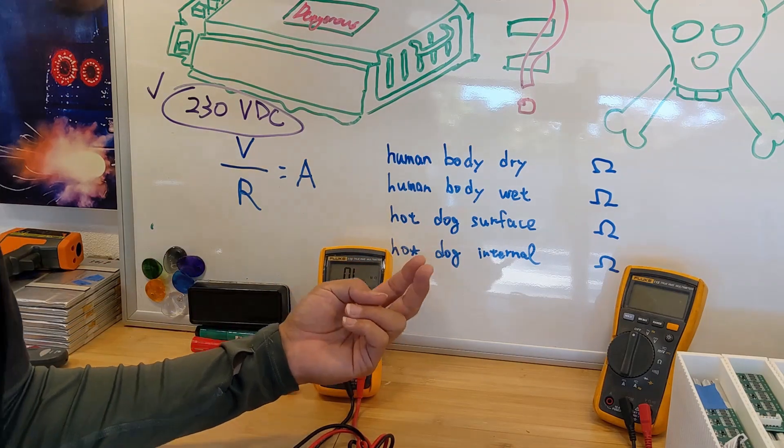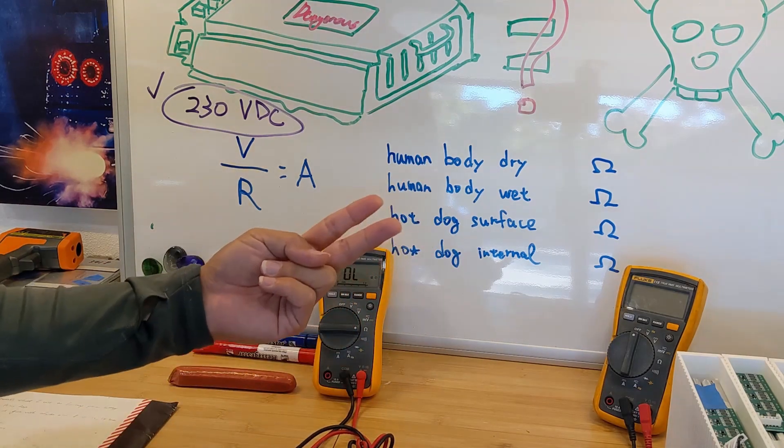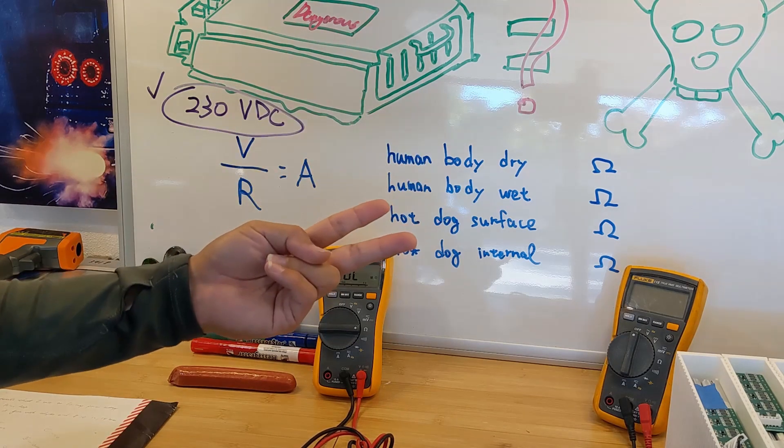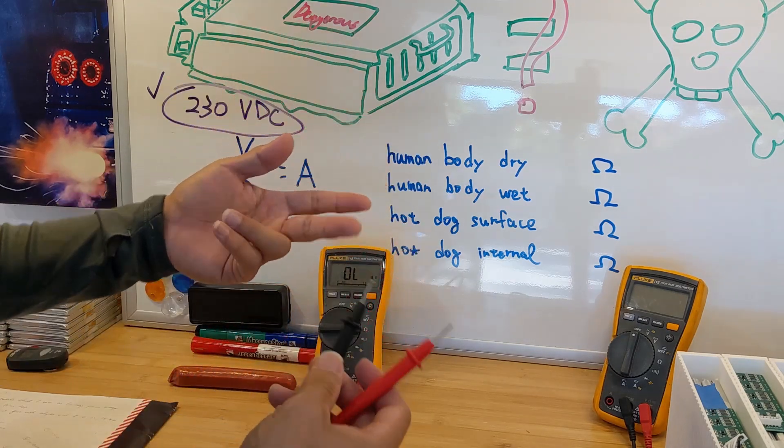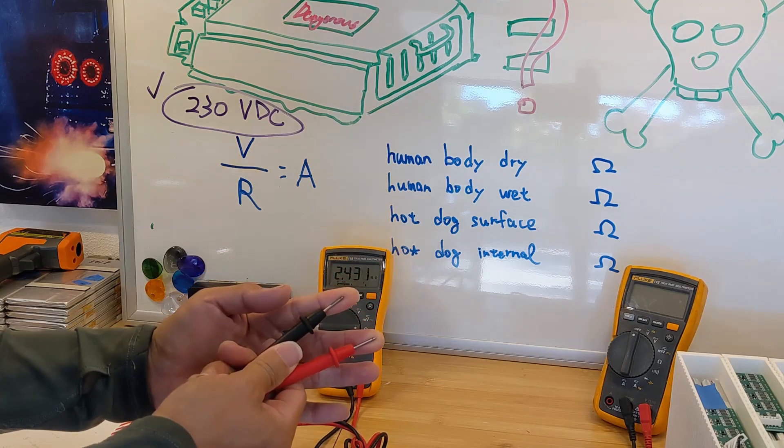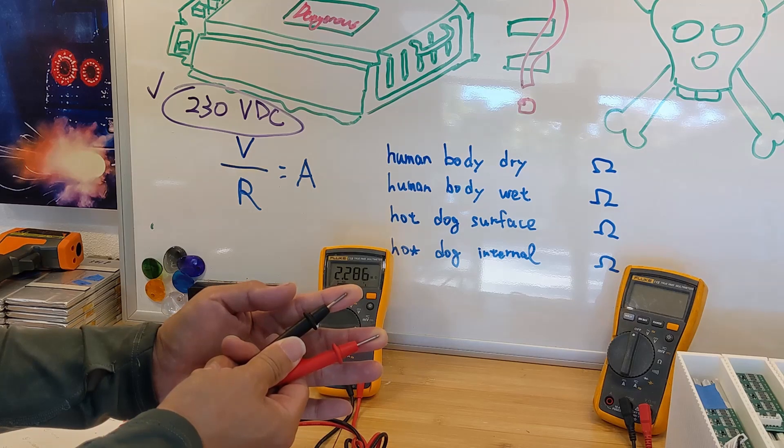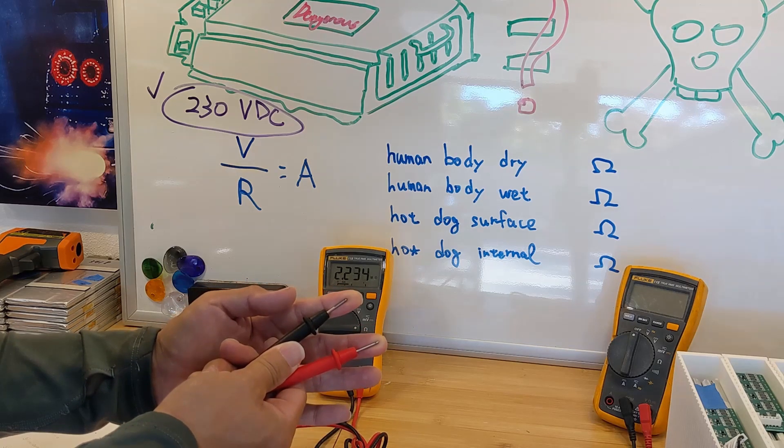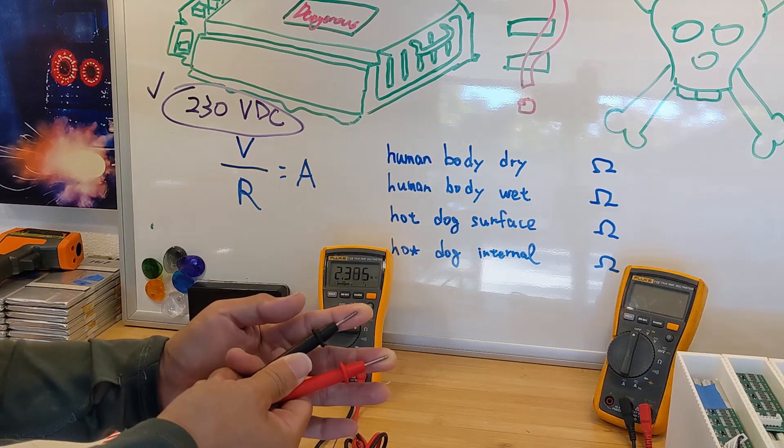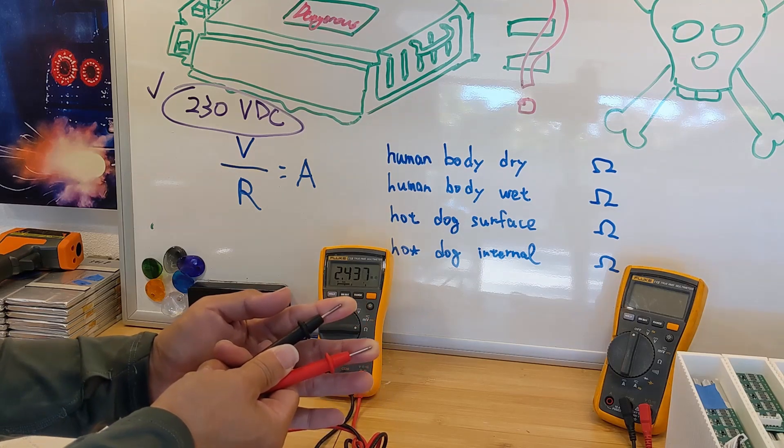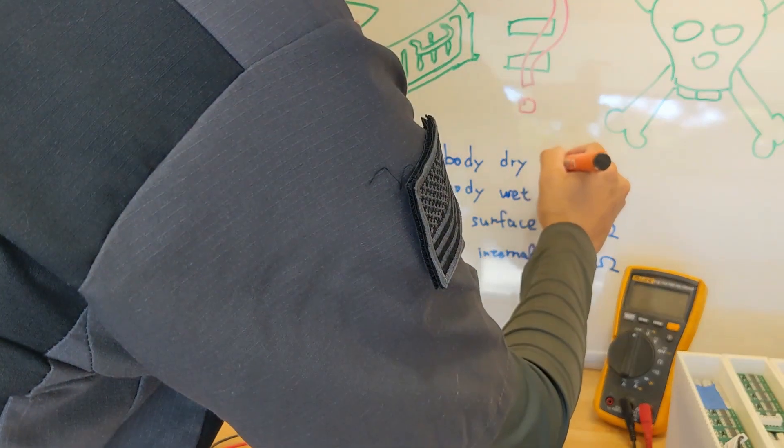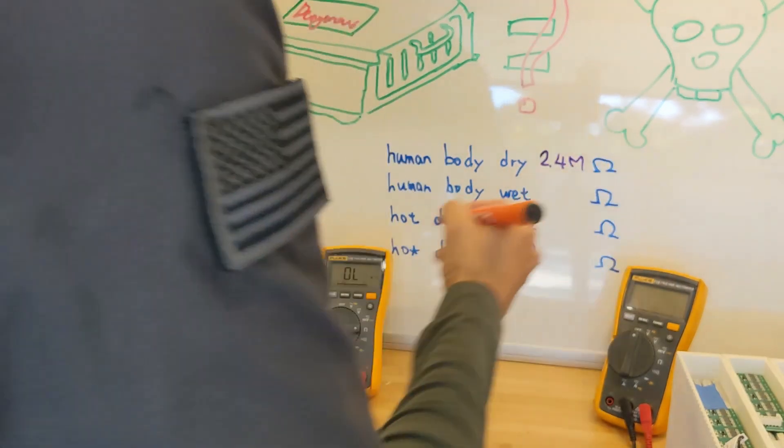Let's do the easy one first. Let's say if I touch the positive and negative with my finger, and right now it's dry morning time, I wasn't sweating anything. Let's take a look at the resistance. It's about 2.3 mega ohm. Let's say 2.4 mega ohm.